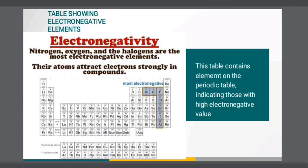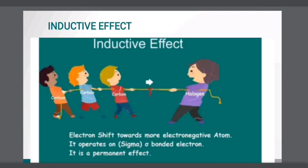This table contains elements on the periodic table including those with high electronegativity value. Observing the periodic table carefully, the colored elements are highly electronegative. We can deduce that elements with high electronegative value will attract electrons to themselves.